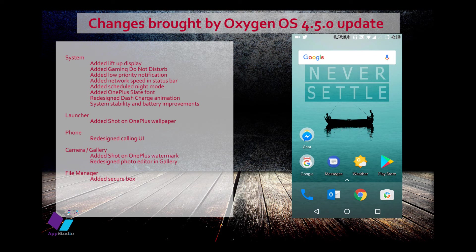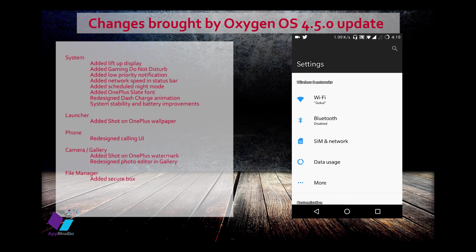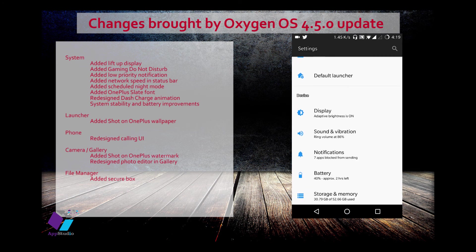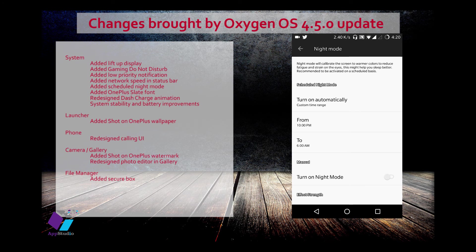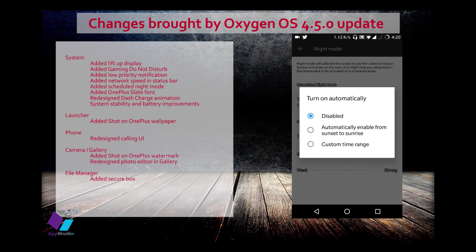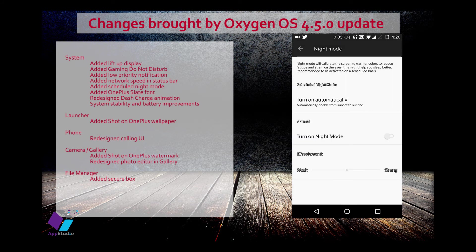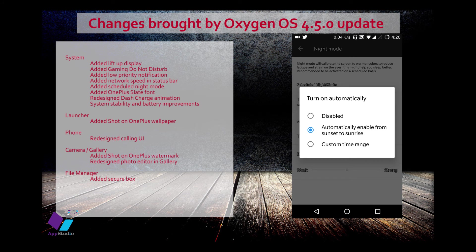The next added feature is scheduled night mode. Go to Settings, then Display, and you'll see the night mode option. You can now schedule it according to a set timing so it automatically switches to night mode. You can enable it from sunset to sunrise, which depends on your location's timing — typically around 6 p.m.